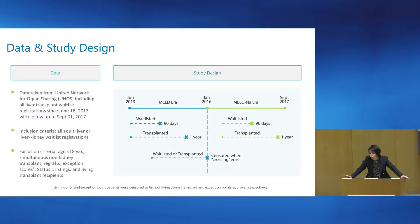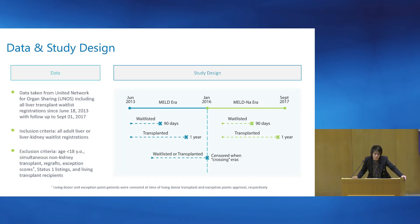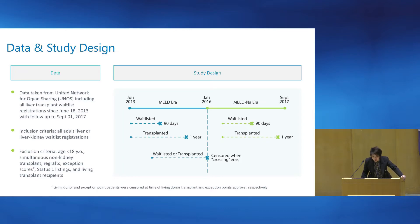Data from this study comes from the UNOS-STAR file, which is a national registry of all transplants in this country. Inclusion criteria are all deceased adult liver or liver-kidney wait list registrations. Exclusion criteria include re-grafts, exception scores, status-1 listings, and non-kidney simultaneous transplants. We defined a MELD era from June 18, 2013 up until January 2016, and the MELD sodium era from January 2016 up until September 2017. Wait list outcomes are evaluated at 90 days, and transplant outcomes are evaluated at one year.